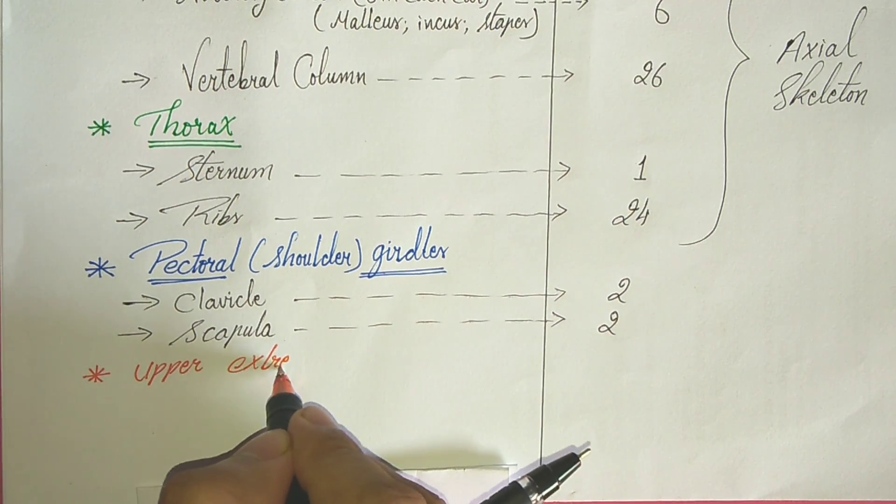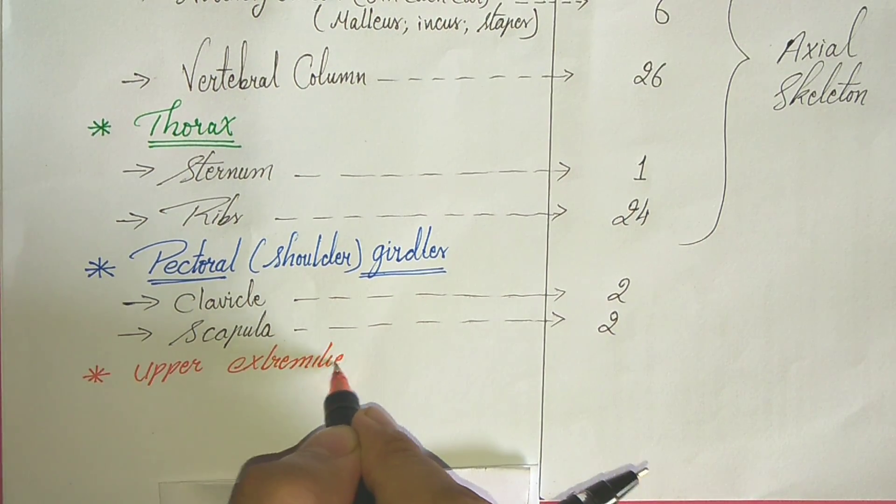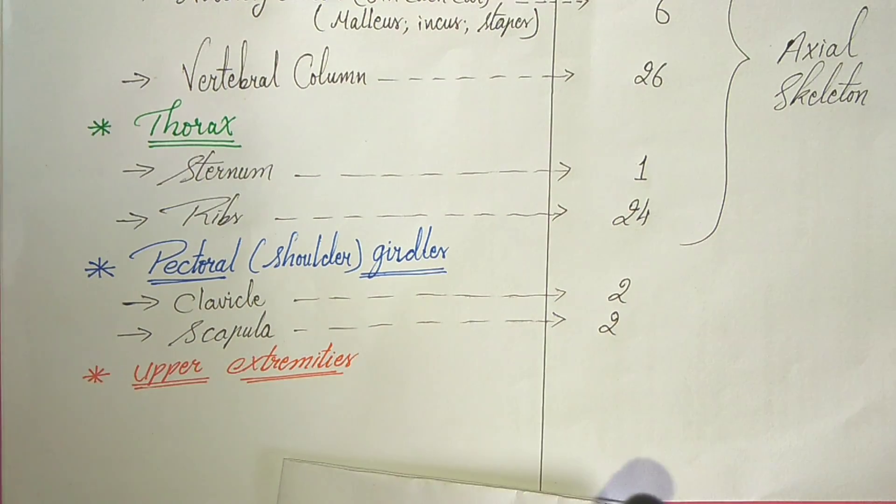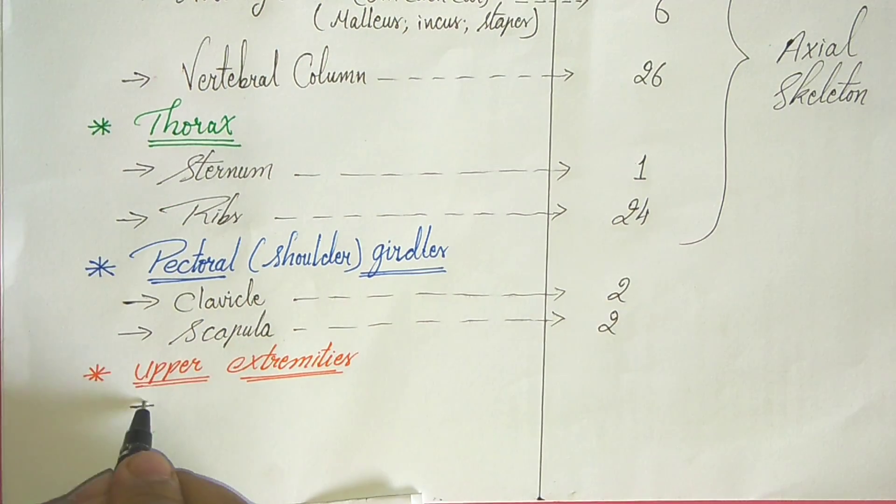In our next video, when we will learn about the classification of bone, there we will see the flat bones. Now come to the upper extremities.